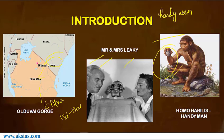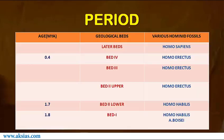Homo habilis means 'handy man' or 'the maker of tools.' In this picture you can see that he is making tools. Homo habilis lived between 2.0 to 1.5 million years ago, and according to Leakey he is a contemporary of Australopithecus boisei.